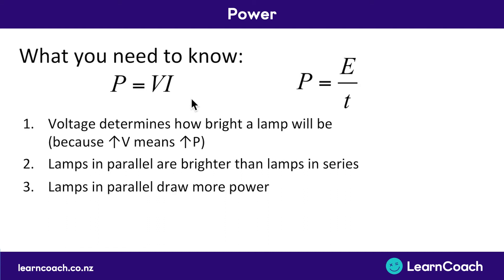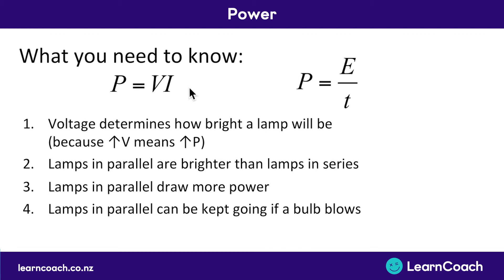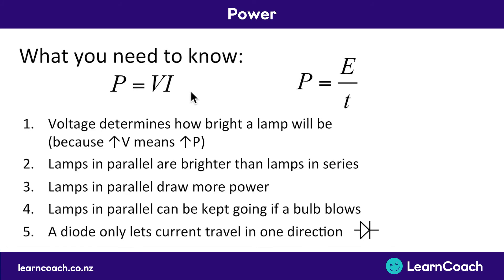Lamps in parallel draw more power because of this equation, and conversely lamps in series draw less power than their parallel counterparts. Lamps in parallel can be kept going if a single bulb blows, because the current can just go around it to the alternate pathway — that's what a parallel circuit is. However, if a bulb blows in a series circuit, there's only one pathway the current can travel through, so no current can flow through that circuit at all. Finally, a diode only lets current travel in one direction. It's an arrow with a line in front of it, and it only lets the current flow in the direction of that arrow.